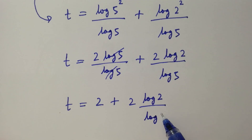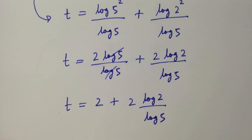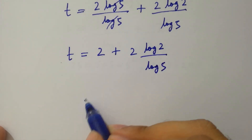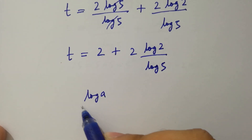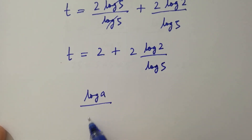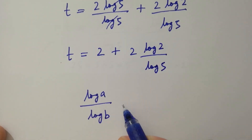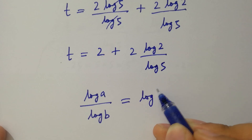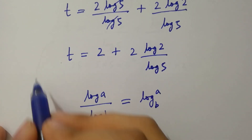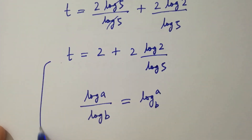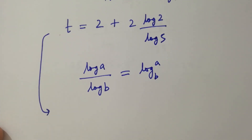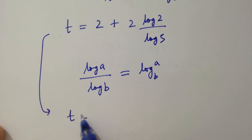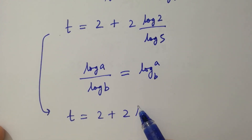Since log a over log b equals log a to the base b, we have t equals 2 plus 2 log 2 to the base 5.